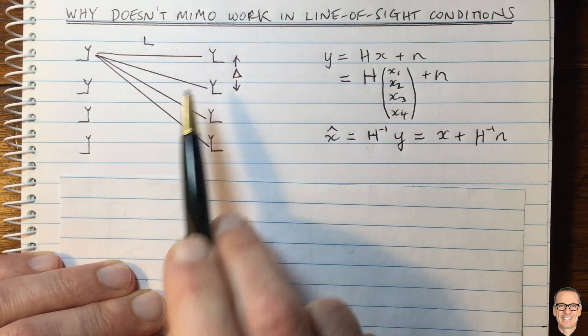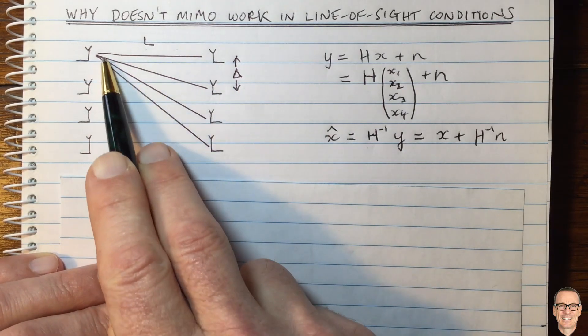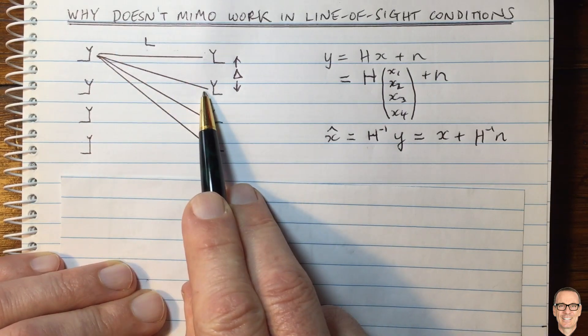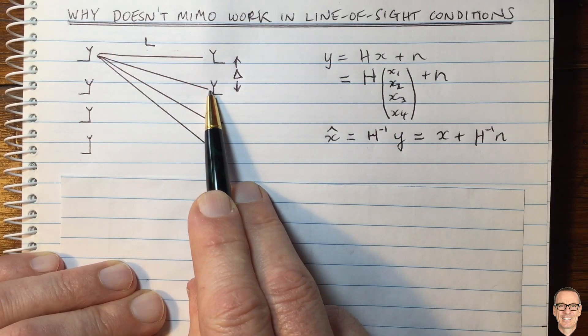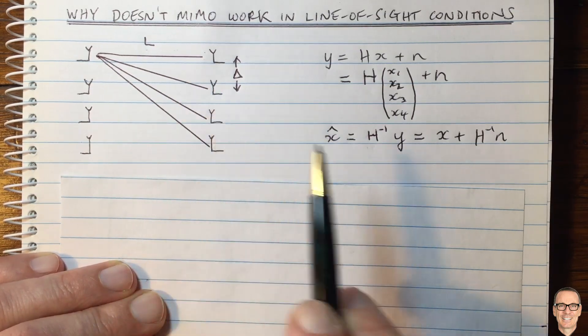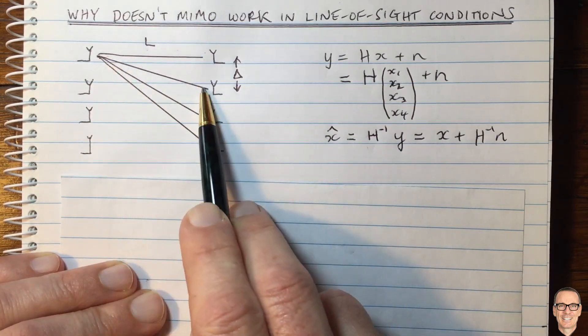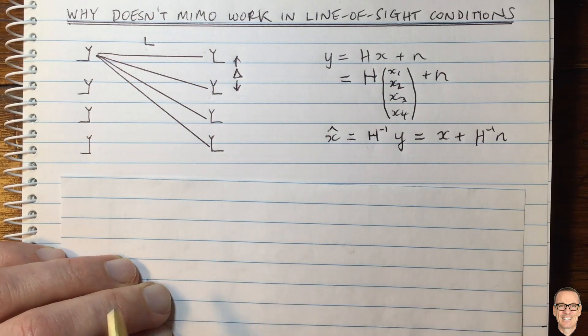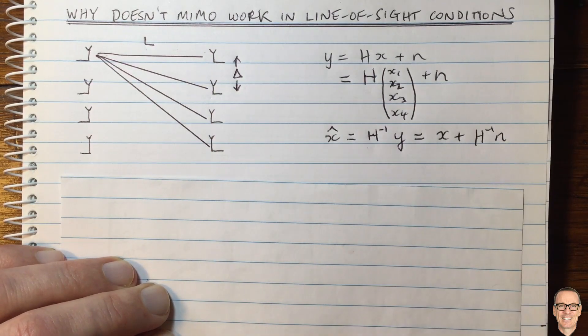We might think that means the gains are going to be the same. But in fact, they differ in their phase. The amplitude will be very similar, or for all practical purposes, exactly the same. But the phase of these paths will be different. And that's important when we're talking about being able to invert the channel matrix.